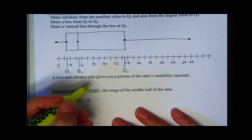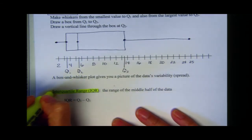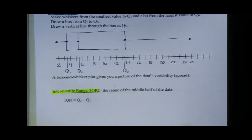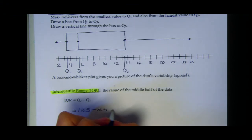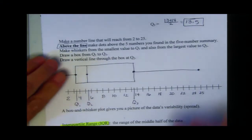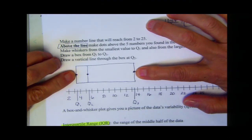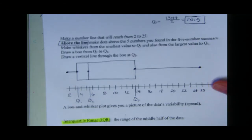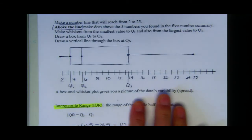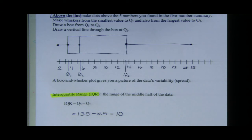The last thing you may be asked to calculate is the interquartile range (IQR). That is quartile three minus quartile one: 13.5 minus 3.5, which is 10. Basically, there are 10 units from one side of the box to the other. That completes Section 3.3.